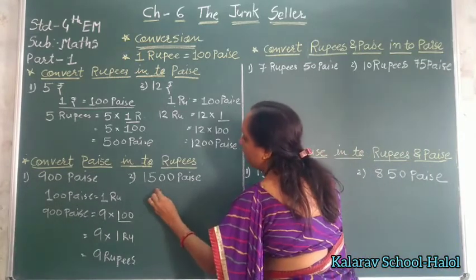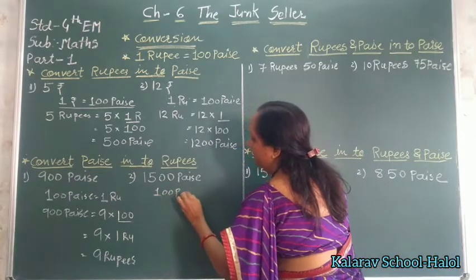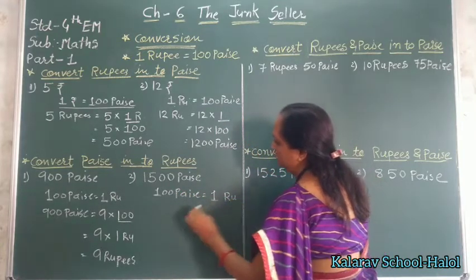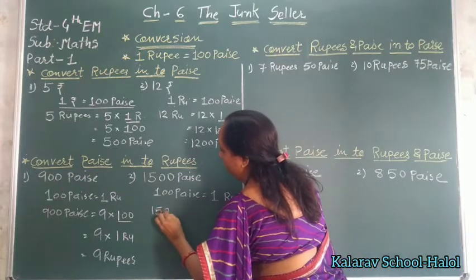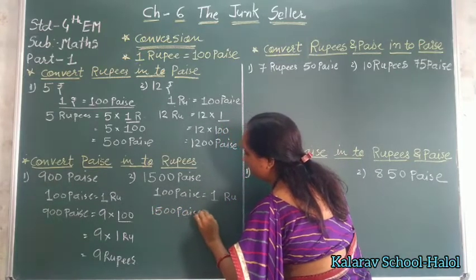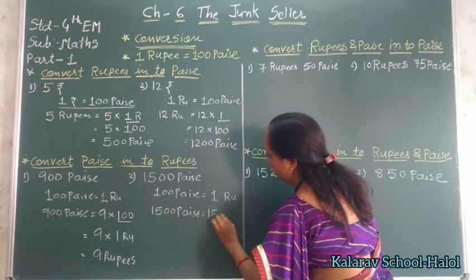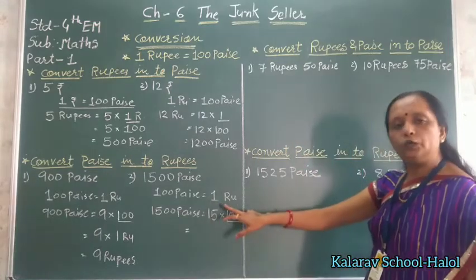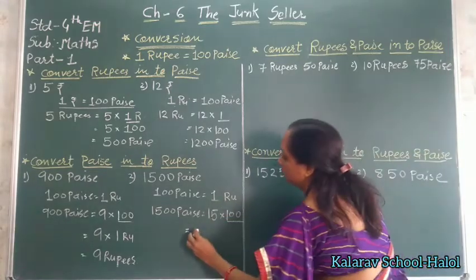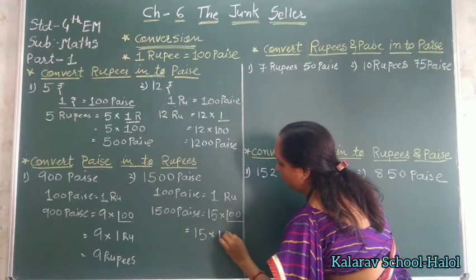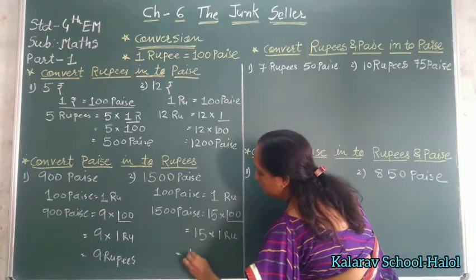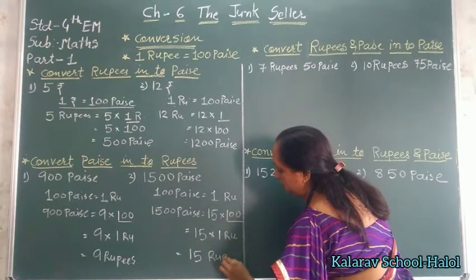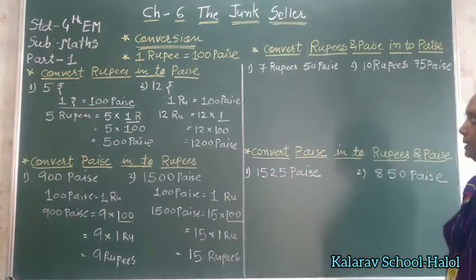Second number: 100 paisa is equal to 1 rupee. So 1500 paisa is equal to 15 multiplied by 100 paisa. Since 100 paisa is equal to 1 rupee, 15 multiplied by 1 rupee equals 15 rupees. So 1500 paisa equals 15 rupees. Do you understand, children?